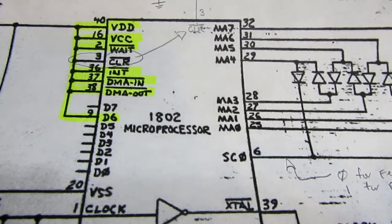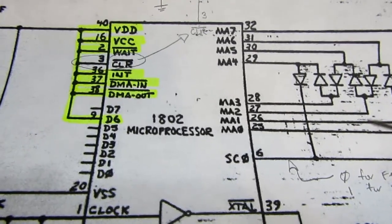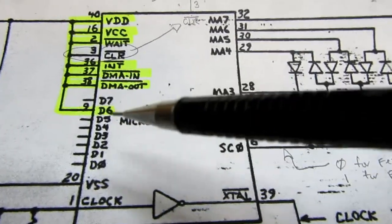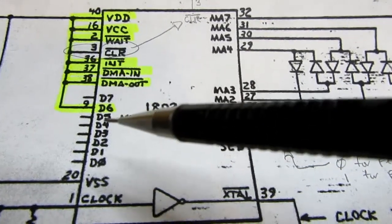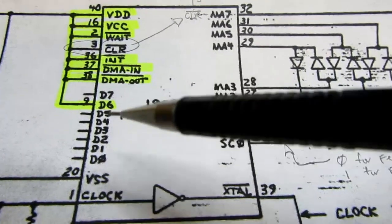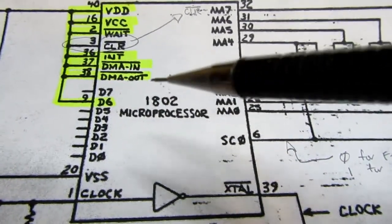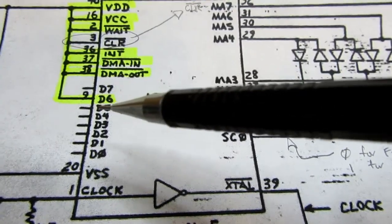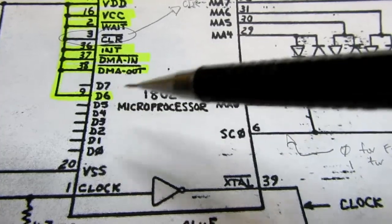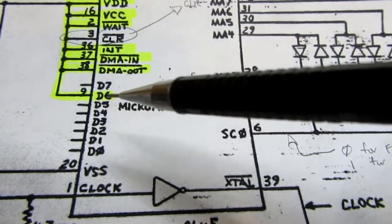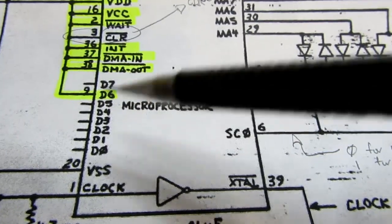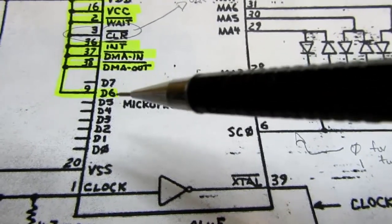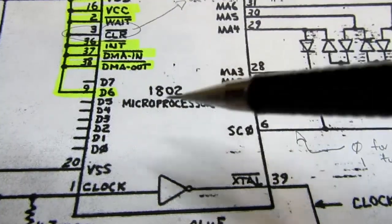A couple other things is that the 1802 has no dead instruction space. So when it executes instructions from memory or wherever, every opcode possibility has a valid instruction. There are no dead instructions where nothing happens with certain combinations of bits. We're allowing them to float. And by floating, they just pick up random electrostatic fields. They just float around to different values. So every time it tries to read data on the data bus, it's going to get some random combination of bits. However, the instruction whose opcode is 00, in other words, all data bits at zero or low, that's the halt instruction.